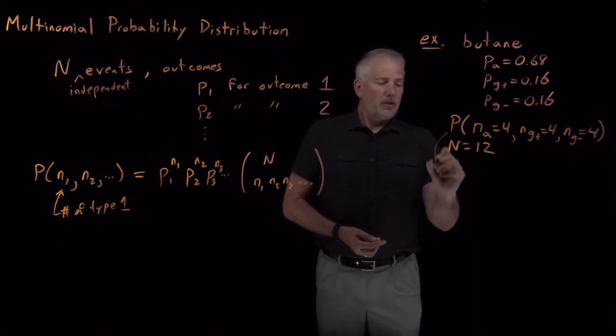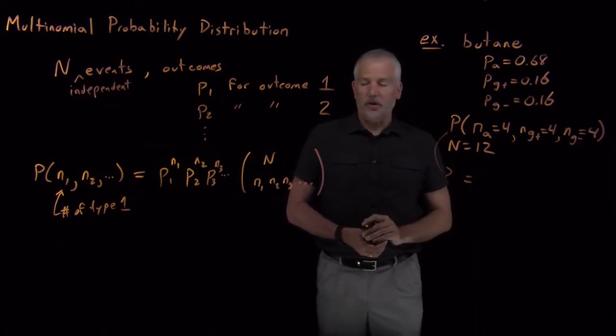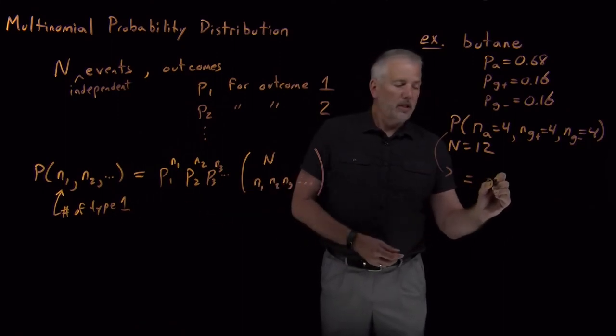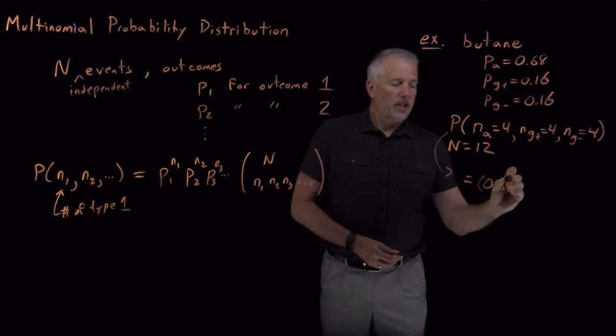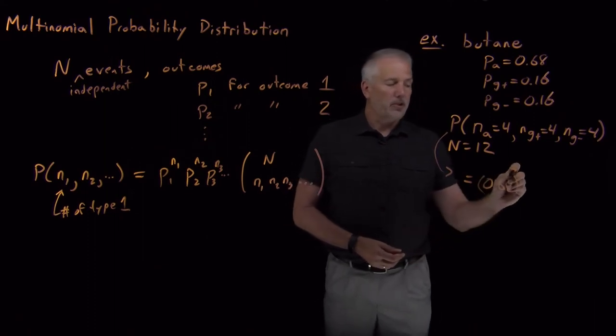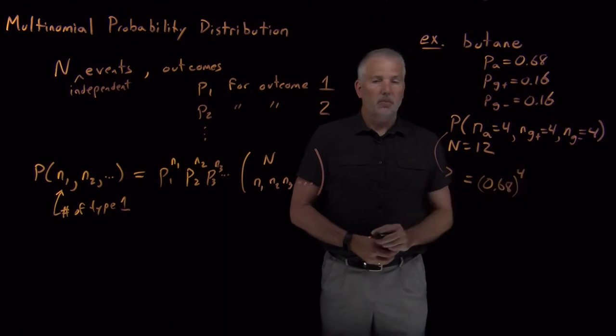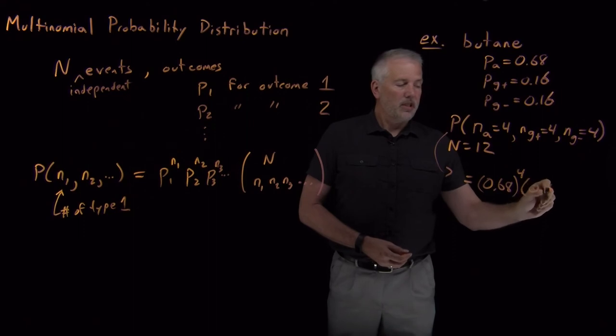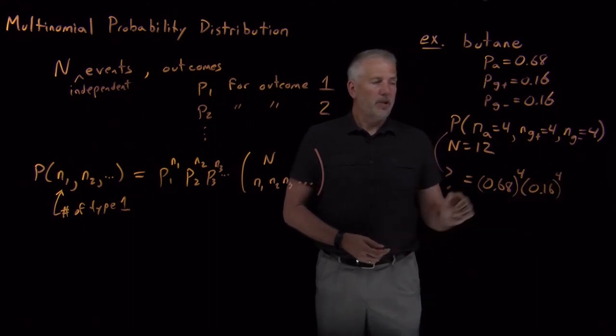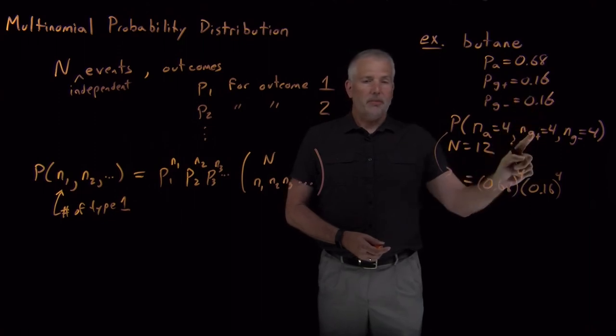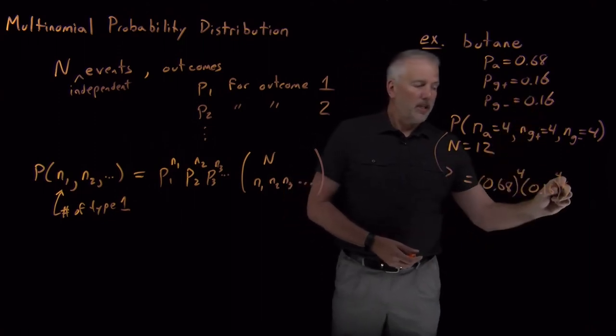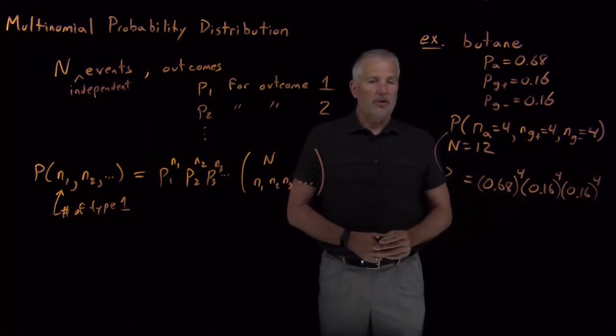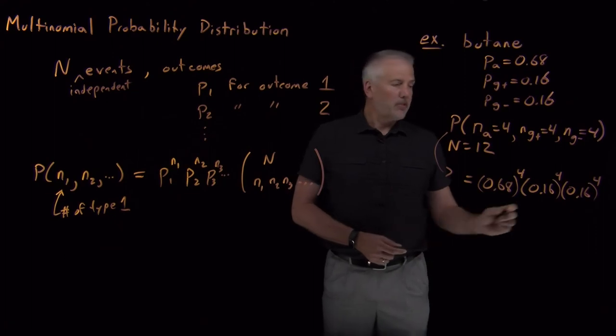So the result of that calculation is we just plug those numbers into the binomial probability distribution. So we need four molecules in the anti-configuration, 68% chance that any individual molecule is in the anti-configuration. 0.68 to the fourth is the probability that it's going to happen four times. 0.16 to the fourth is the probability that a gauche-plus event with probability 16% will happen four times. And then in addition to that, 0.16 raised to the fourth is the probability that a gauche-minus event will happen four times.